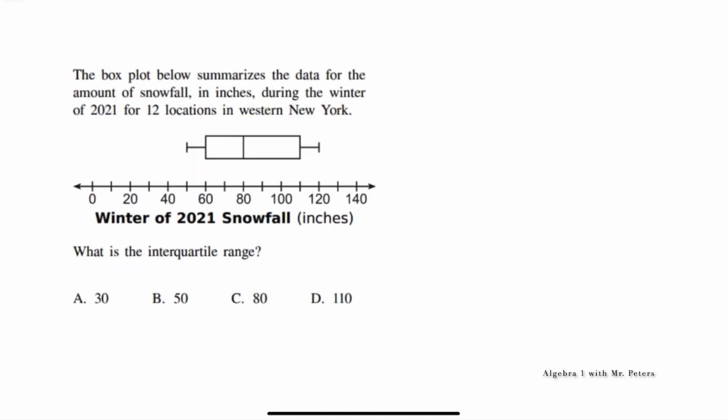We're dealing with a box and whisker plot and they're asking us about the interquartile range. This can be a very simple problem if you just remember key information. You know box and whisker plots have the minimum Q1, Q2, Q3, and the maximum value. When we're talking about the interquartile range, we're talking about the difference between Q1 and Q3. Well, we know that Q3 is equal to 110 and Q1 is equal to 60. So once we subtract, we know that the interquartile range is going to be 50. So the correct answer choice is B.